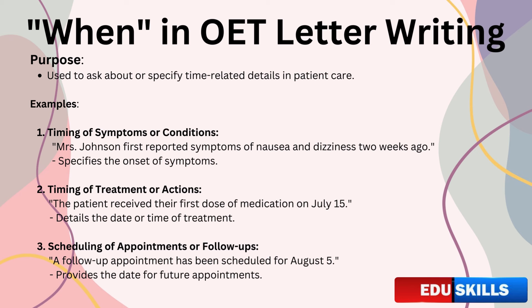Example three: scheduling of appointments or follow-ups. You might also use when to mention scheduled appointments. For instance: 'A follow-up appointment has been scheduled for 5th August.' Here, when provides the date for the next appointment, helping in planning the patient's ongoing care. Accurate time details are crucial in OET letters. A common mistake is being vague about timing — saying 'the treatment was given recently' is less clear than 'the treatment was given on 15th July.' Always aim to be precise with your time references. Using when properly helps you provide clear information about time-related aspects of patient care.